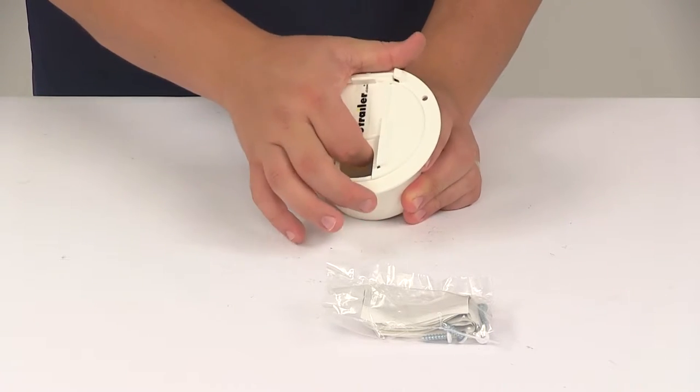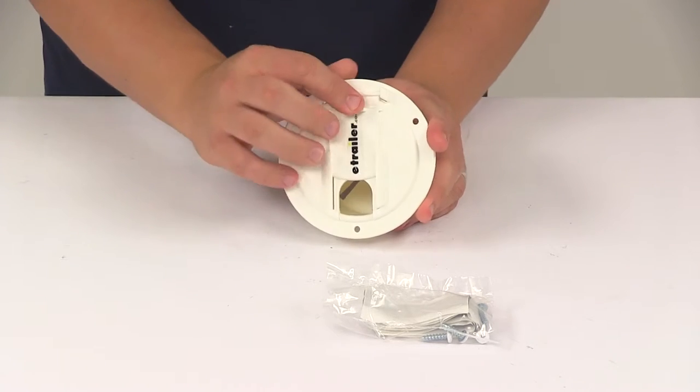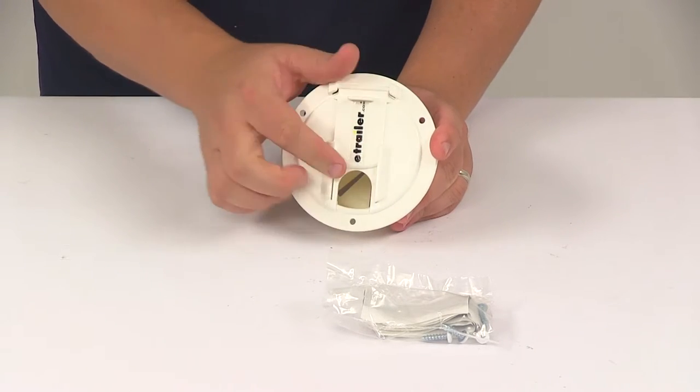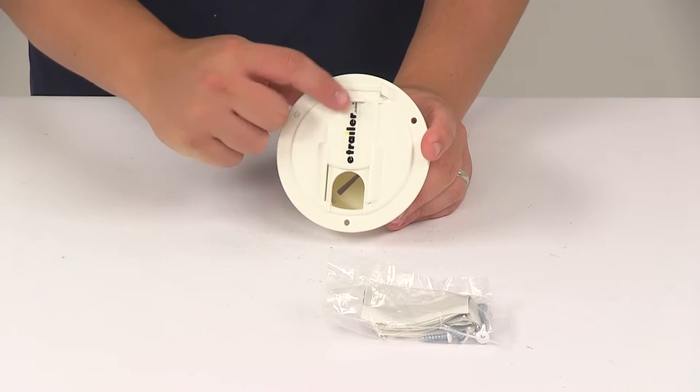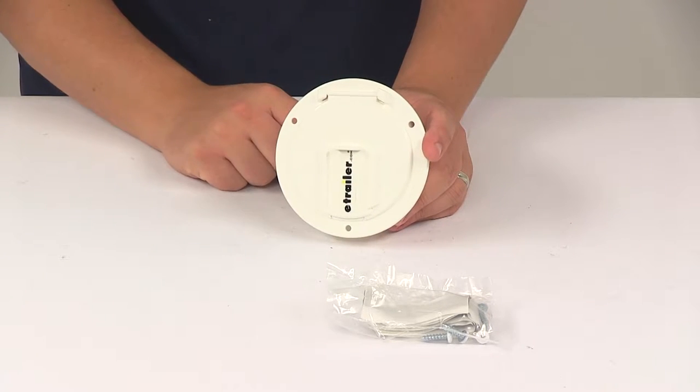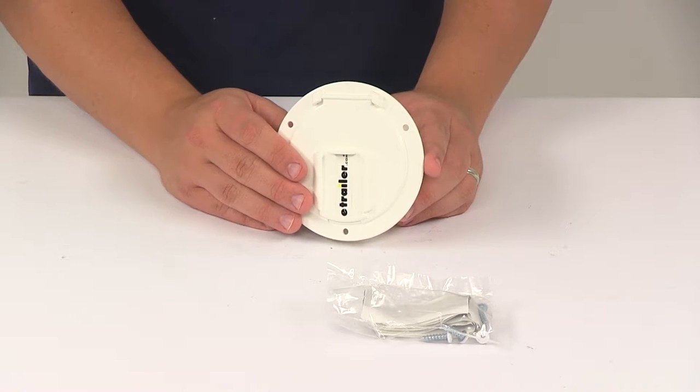The hatch door swings open for easy access, and then located on the front it's got the sliding door as well. That allows the cable to pass through with the main hatch door closed. You can also close that, and that's going to keep unwanted items out of the stored area when the cable isn't being used.